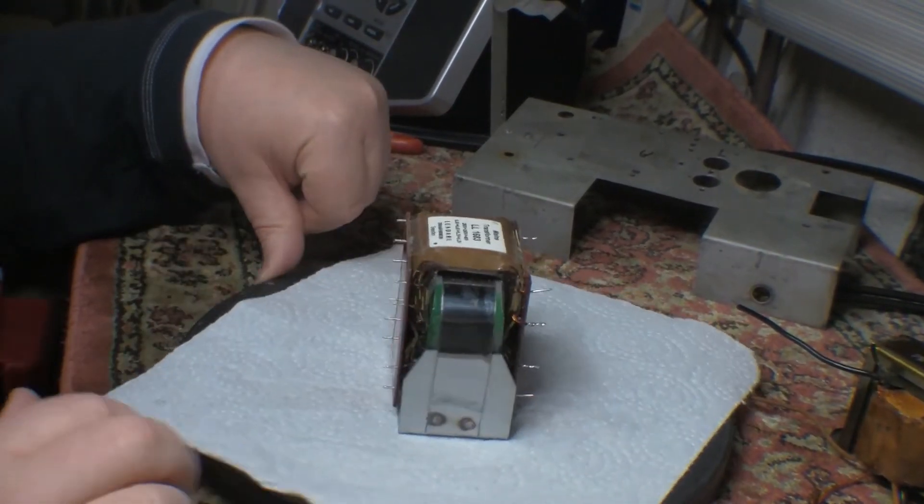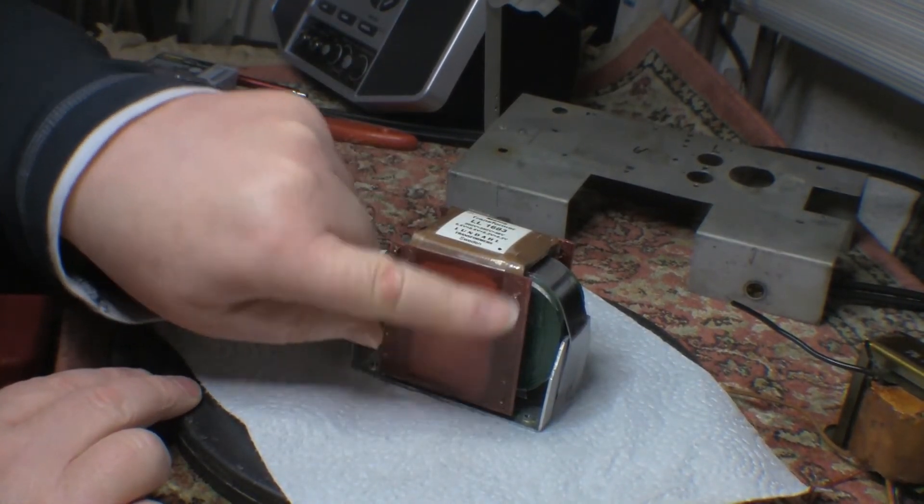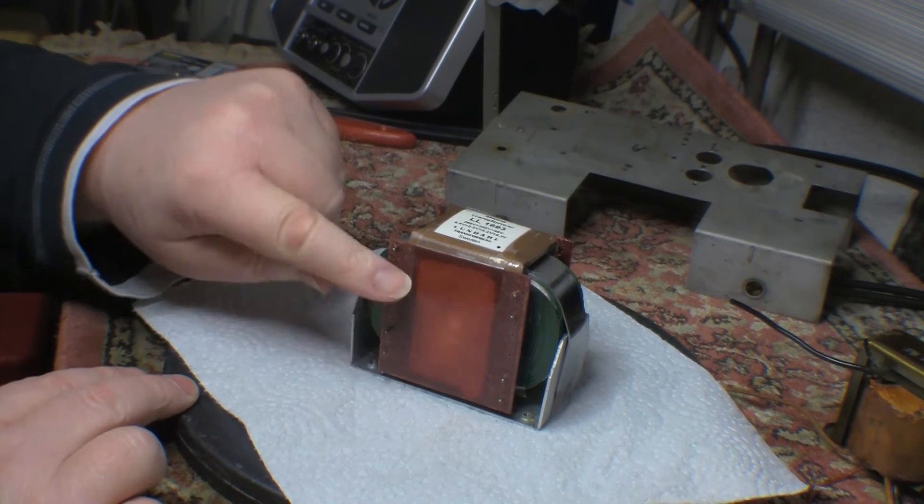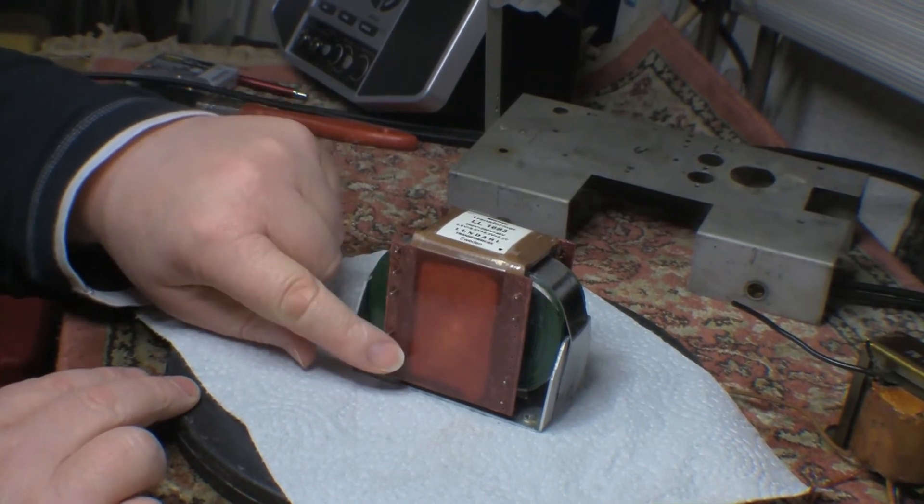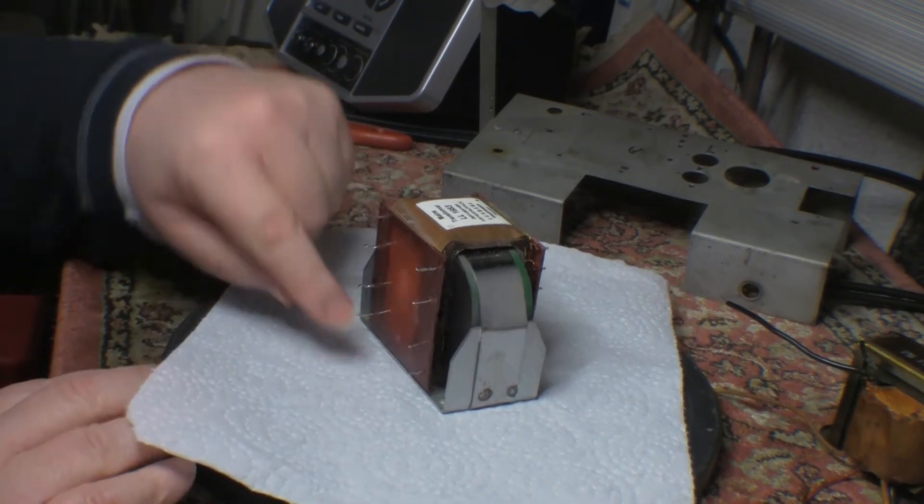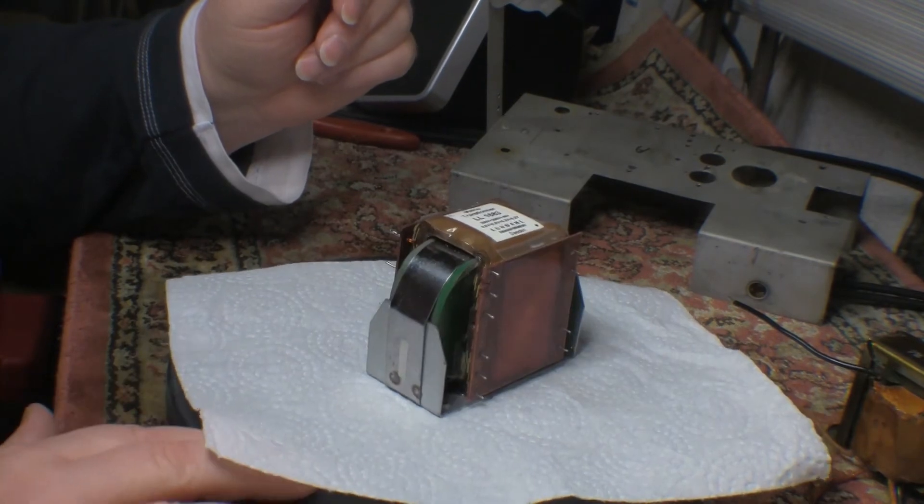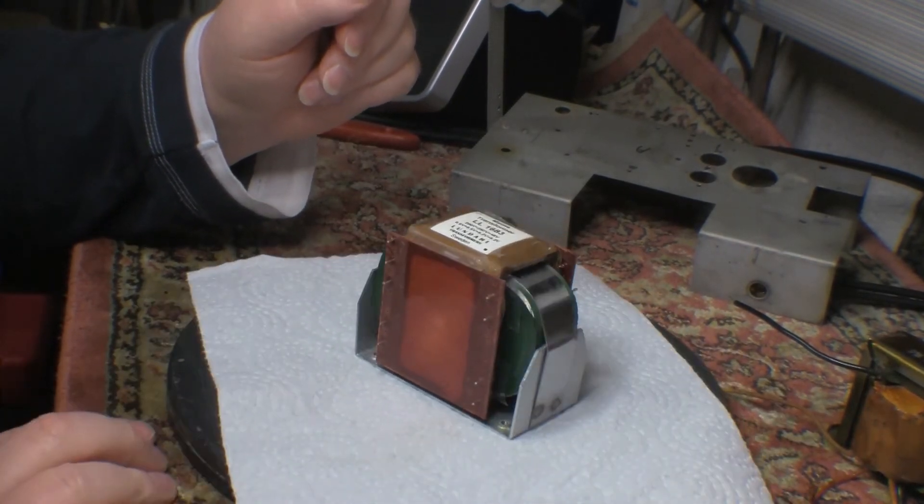Nothing much in the way of indications on it, but essentially these are the two primaries over here, these are the different secondaries in terms of high voltage, and then on the other side here we have different voltages for the 5.2 and 6.6 volt secondaries for filaments and stuff.